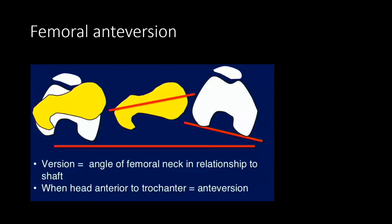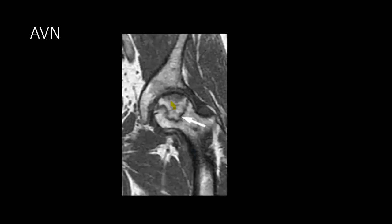A few words about femoral anteversion: normally femoral anteversion should be around 5 degrees. Version is the angle of the femoral neck in relation to the shaft or condyle. If it is retroverted, that is abnormal and it can also cause FAI. Now we'll show some cases. One of the common problems in the femoral head is avascular necrosis. There is a serpiginous line we can see in the femoral head. There should be subchondral edema if it is active. There are two signs of AVN being active: one is surrounding edema, and another is joint effusion. If there is no edema and no joint effusion, then most likely it is old or early AVN.